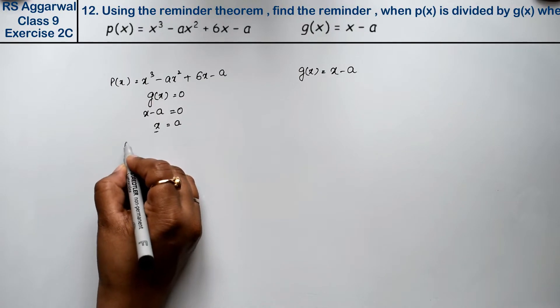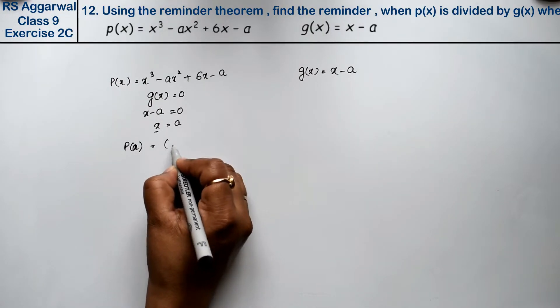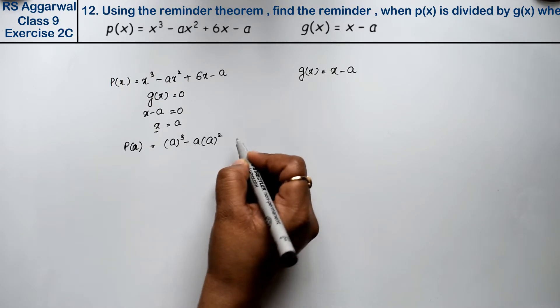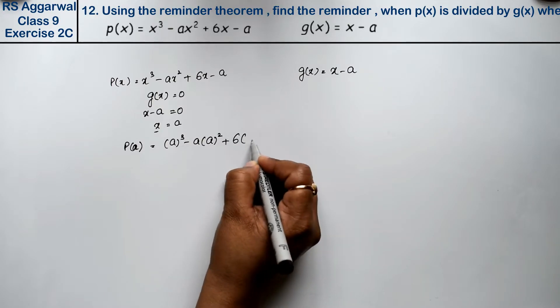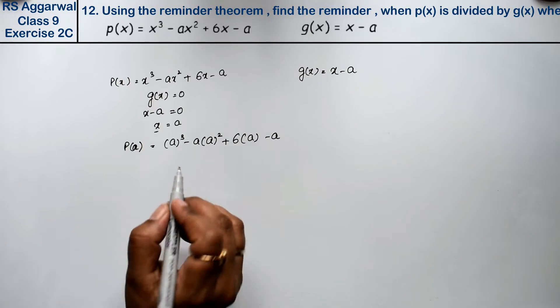Now, x's value is in p(x). x's value is a. So a cube minus a into a square plus 6 into a minus a. Now where x was, I wrote a.